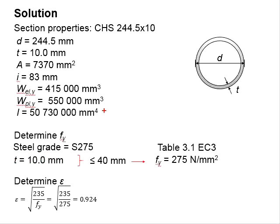To determine the yield strength of the member, first you need to know the steel grade. Check the thickness of the member is less than 40mm. Then you will know that the yield strength is 275. Substitute the Fy into the equation, you get your epsilon equals to 0.924.